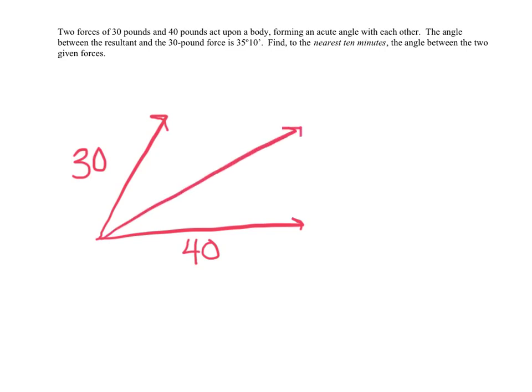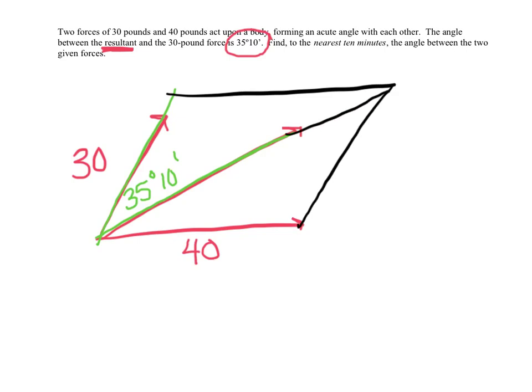The angle between the resultant and the 30 pound force is 35 degrees in ten minutes. Oh boy, do we hate these minutes. Let me read that again. The angle between the resultant. So I'm going to get my highlighter. Here's my resultant and the 30 pound force. So use that highlighter to identify it. That angle that they're talking about. That is the angle that's 35 degrees in ten minutes.